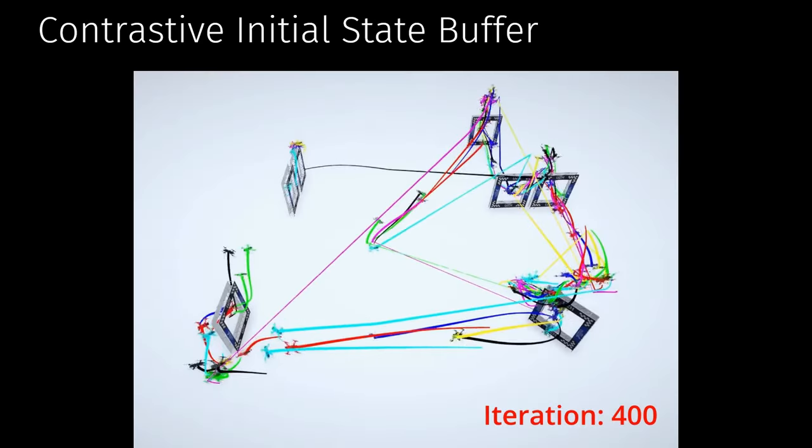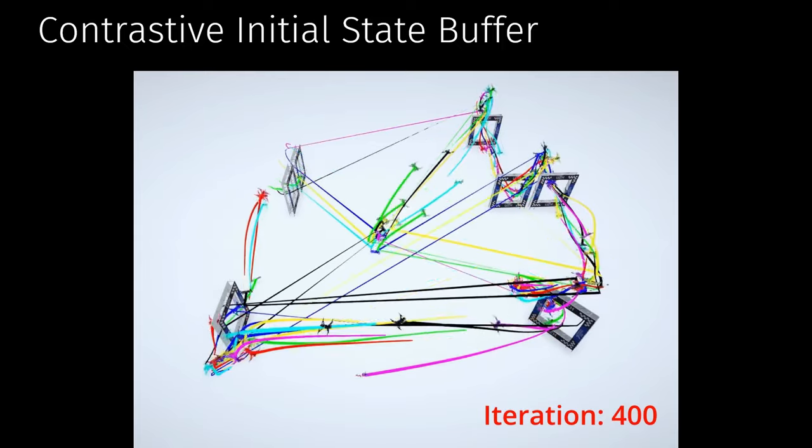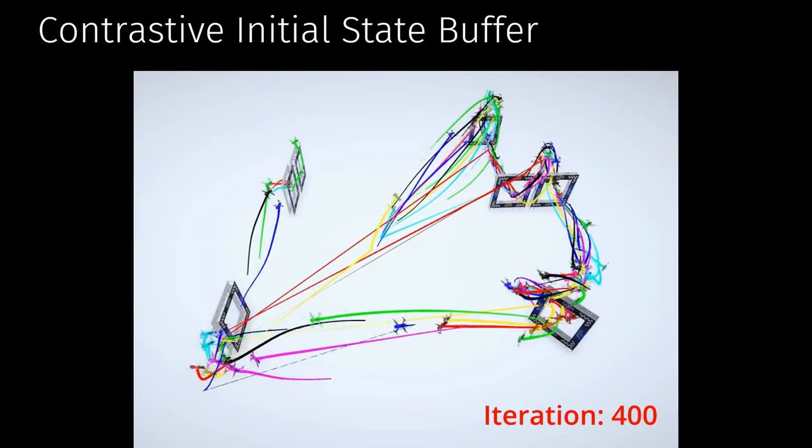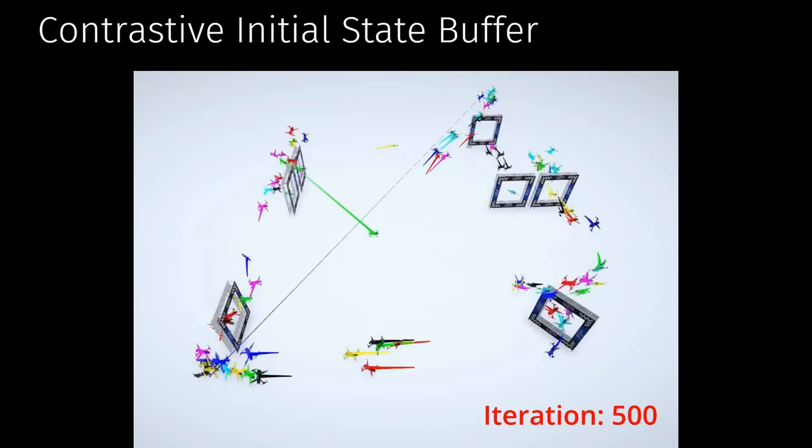In our work, we introduce a contrastive initial state buffer, which strategically selects states from past experiences and uses them to initialize the agent in the environment in order to guide it toward more informative states.